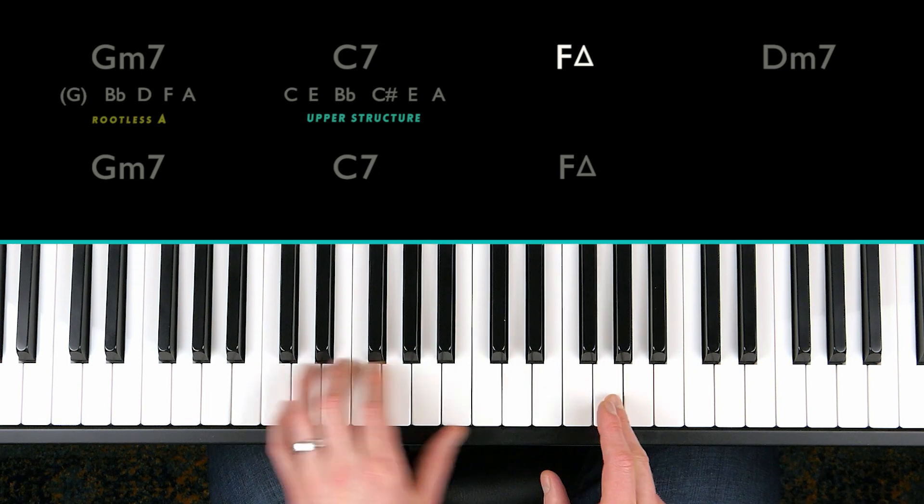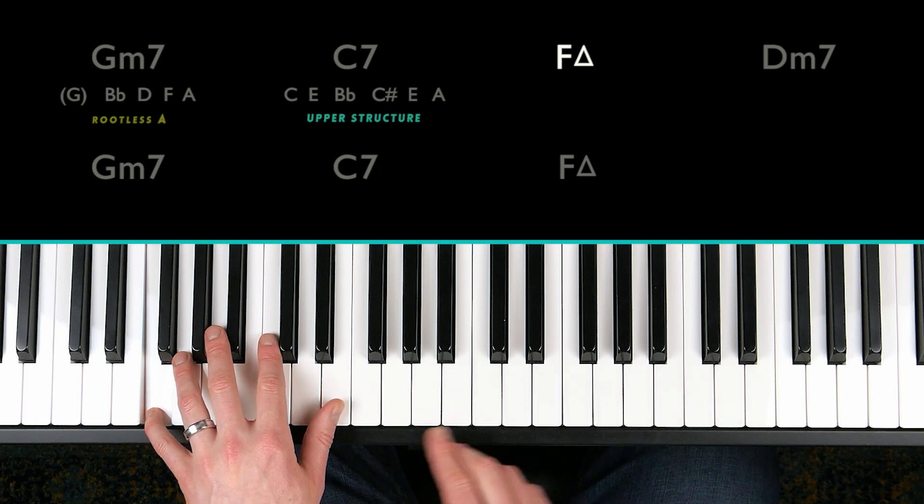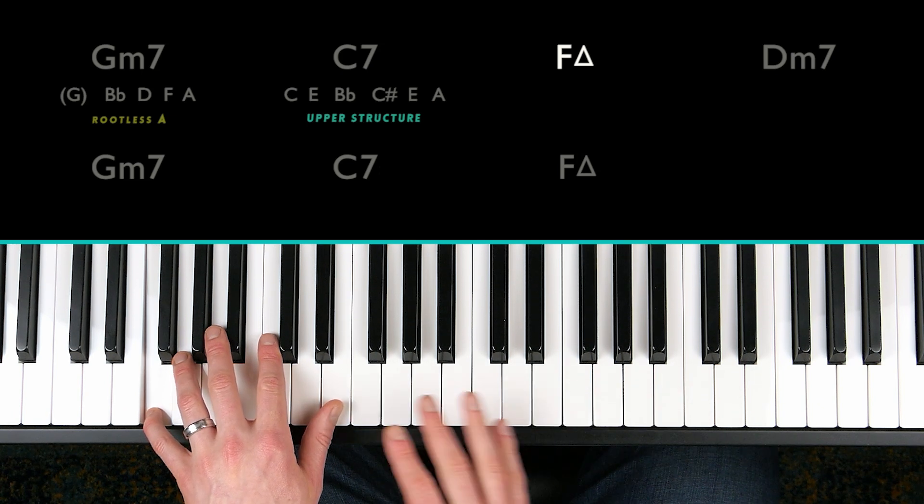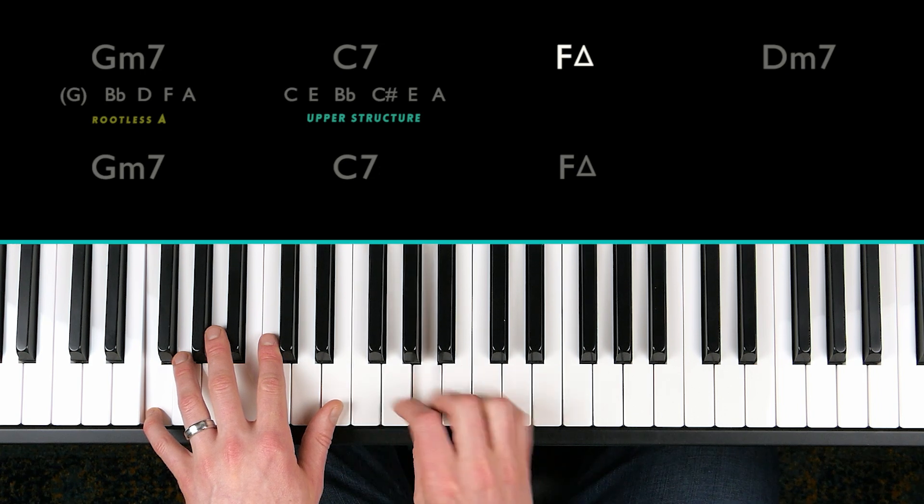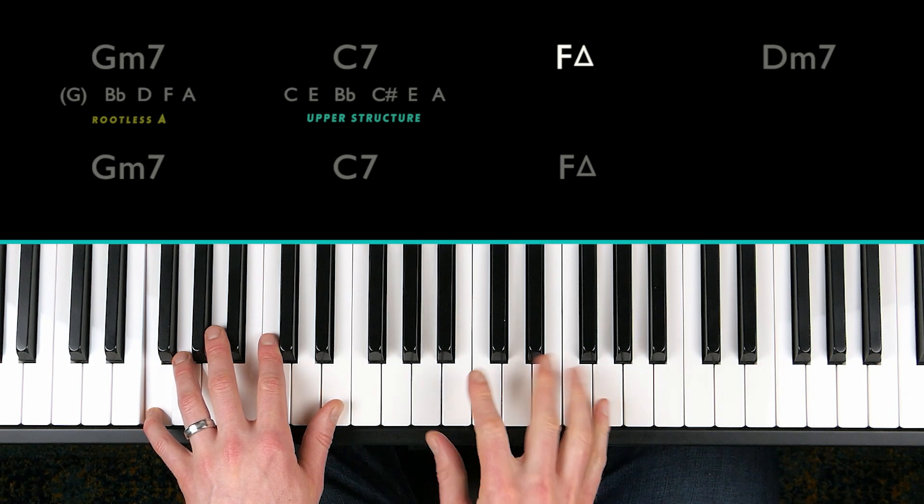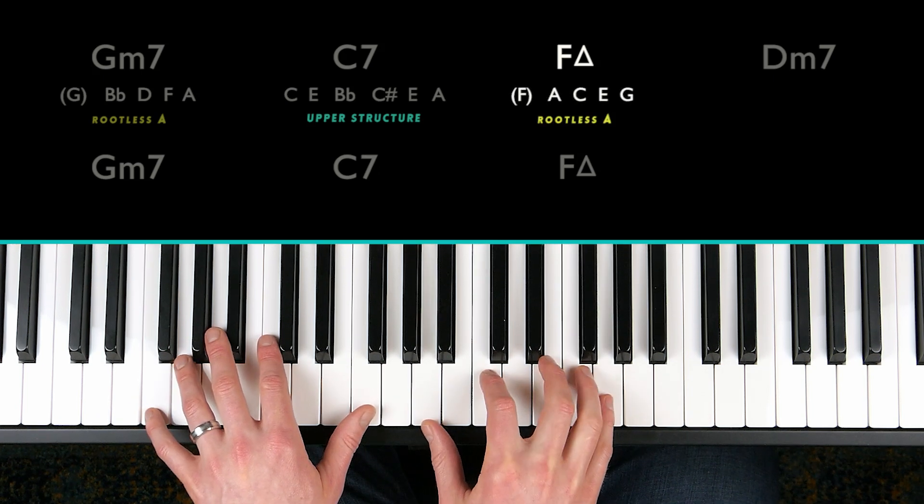Well, that again is a good situation for a rootless voicing, position A. So which notes am I going to play? Well, F major seven, find the third. It's a major third, two whole steps, and then build a minor seven chord, A minor seven. That's my voicing.